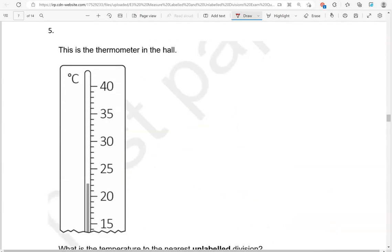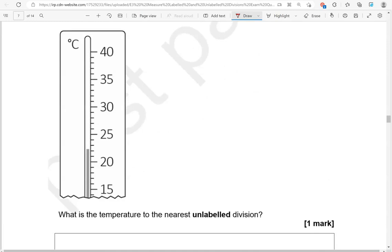This is the thermometer in the hole. What is the temperature to the nearest unlabeled division? That would be this one here. 20, 21, 22, 23, 24, 25, it works. So this is 22 degrees Celsius.